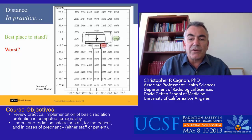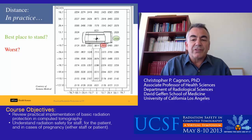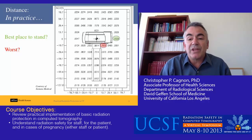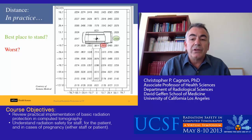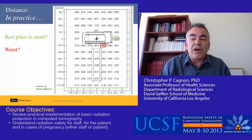The absolute worst place to stand is right in the corner between the gantry and the table, which is of course where the individual generally stands to insert and guide the needle or any other device. The absolute best place to stand — and this is all unshielded, just in the scan room with the patient — is directly off to the side of the gantry, where the gantry itself provides the most protection, a small fraction of the exposure at the gantry-table junction marked in red.